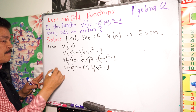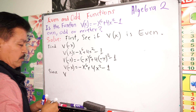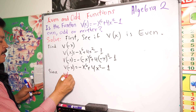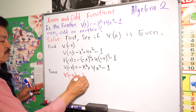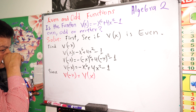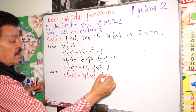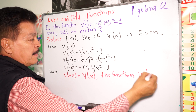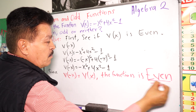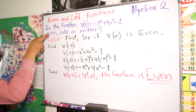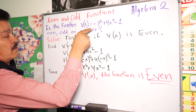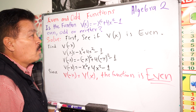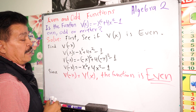Since f of negative x equals f(x), the function is even. So this function is even — that is the answer. The question was: is the function f(x) equals negative x to the sixth power plus 4x to the second power minus 1 even, odd, or neither? It's even.